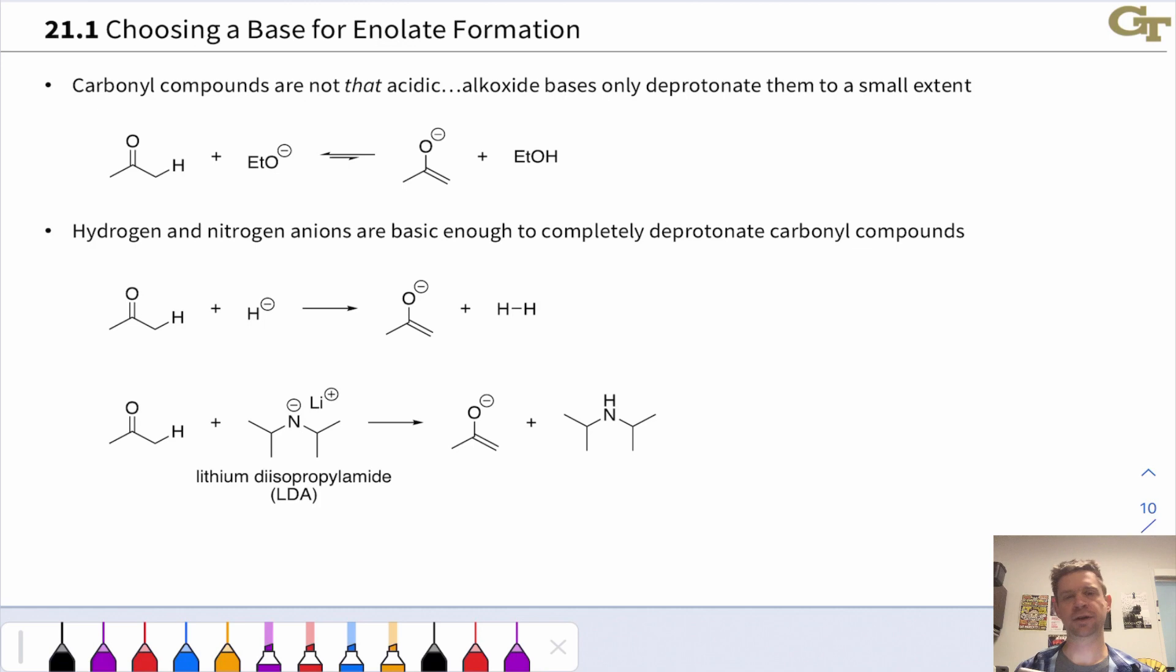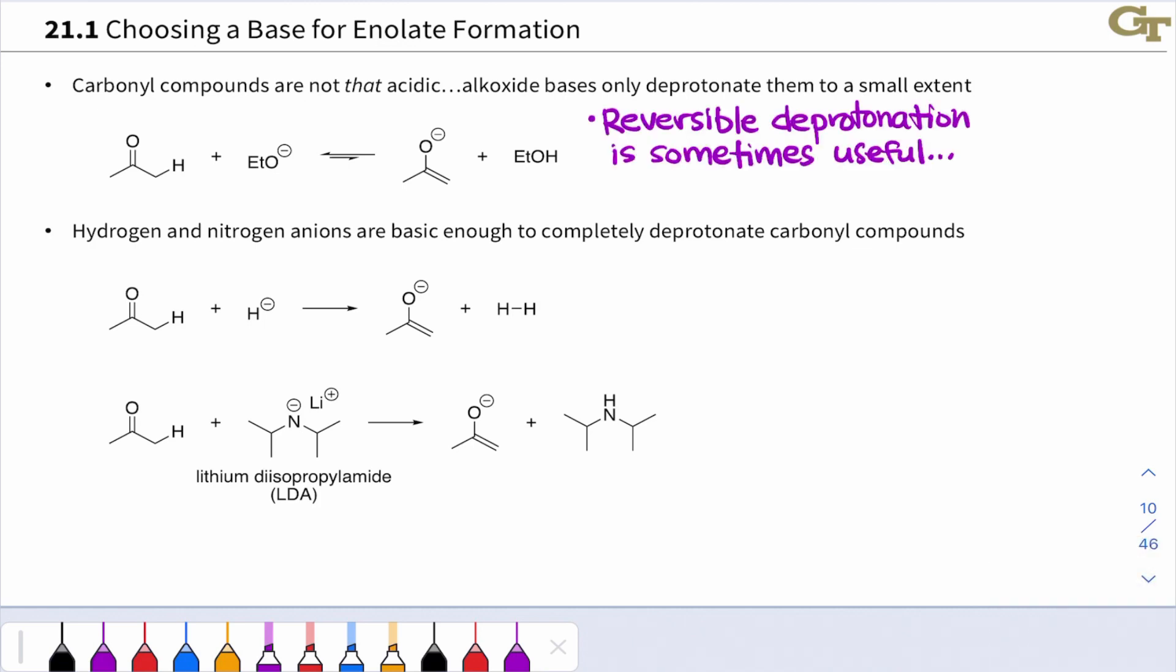Reversible bases are not that strong. One thing we need to keep in mind here is that carbonyl compounds are not that acidic. And so alkoxide bases, sodium methoxide, sodium ethoxide, sodium hydroxide, which is in that same class of just an unstabilized O-, only deprotonate at the alpha position to a small extent.